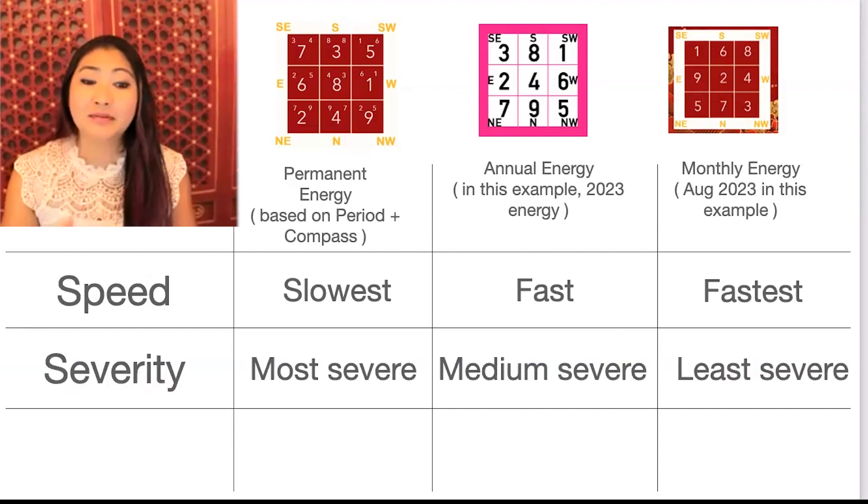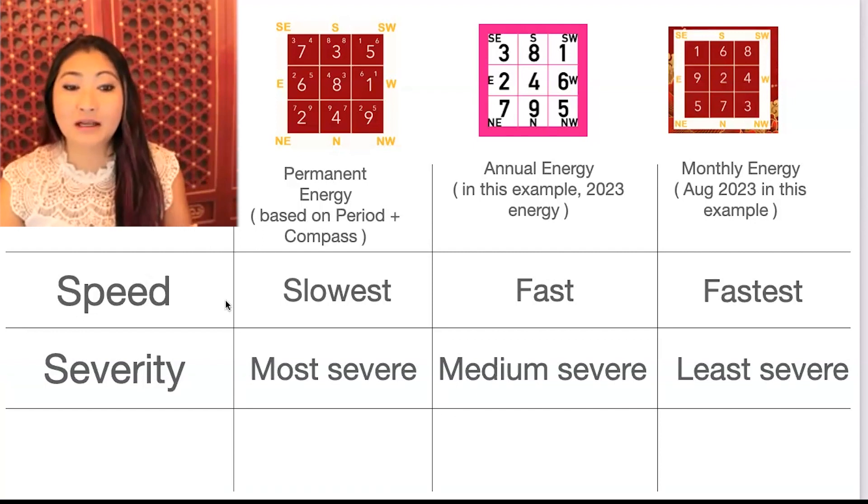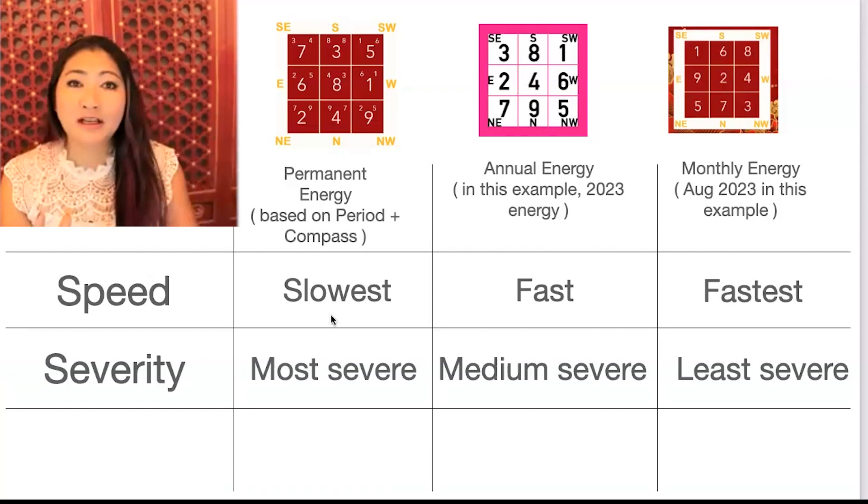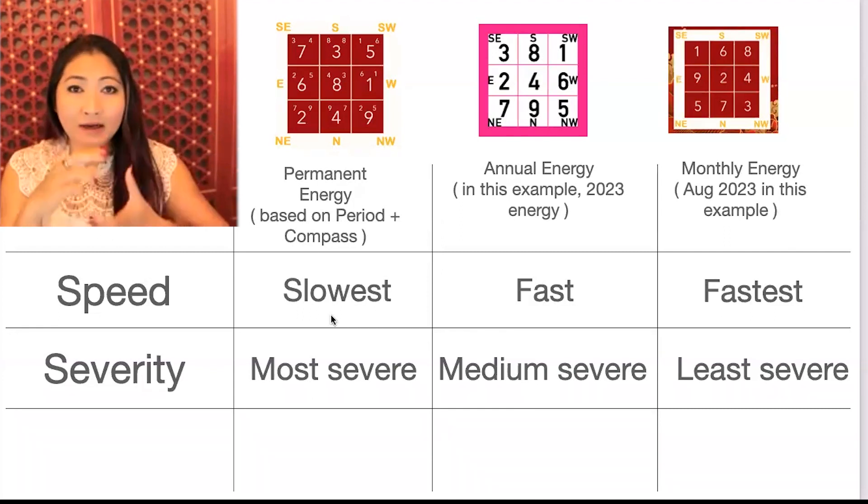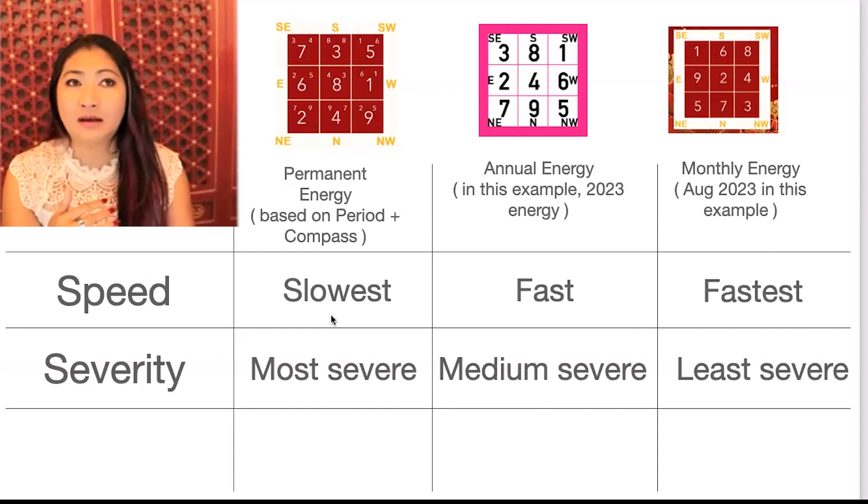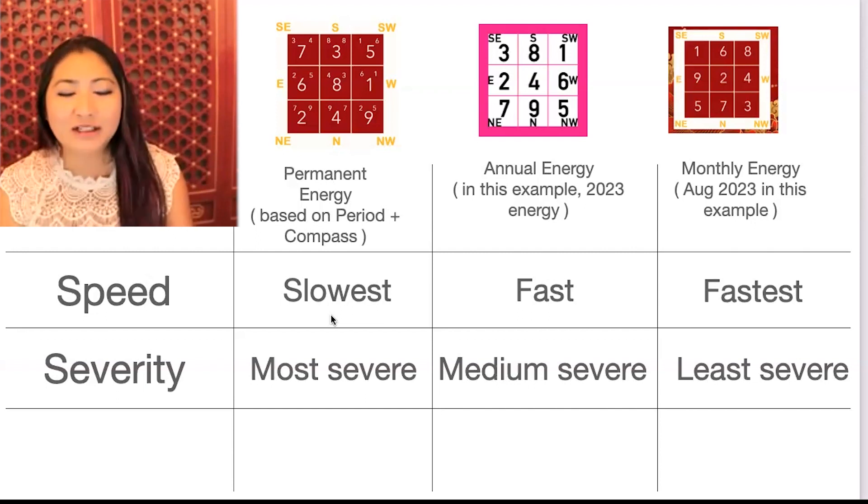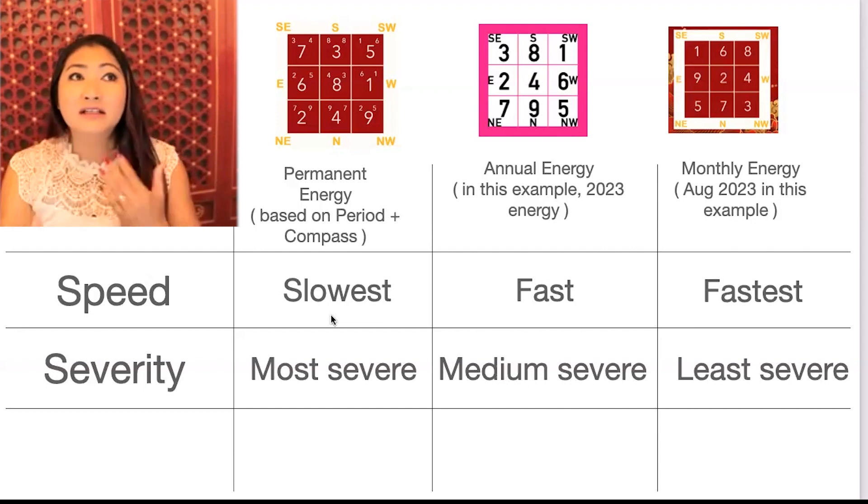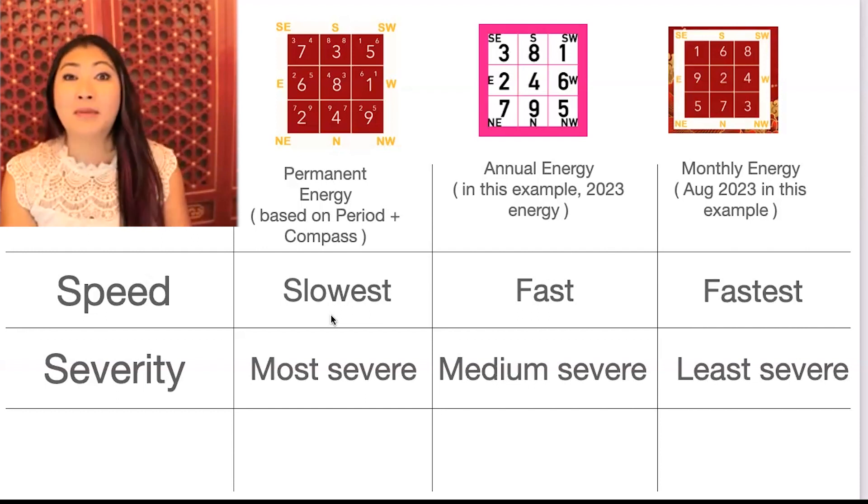Next is the severity. As I mentioned before, when we were talking about the speed, the permanent energy, let's talk about illness, for instance. Once that permanent energy takes hold, where illness is concerned, it is usually the ones that are more life-altering. Maybe a more severe accident, a stage three or stage four cancer, illnesses that it's harder for you to come back from.